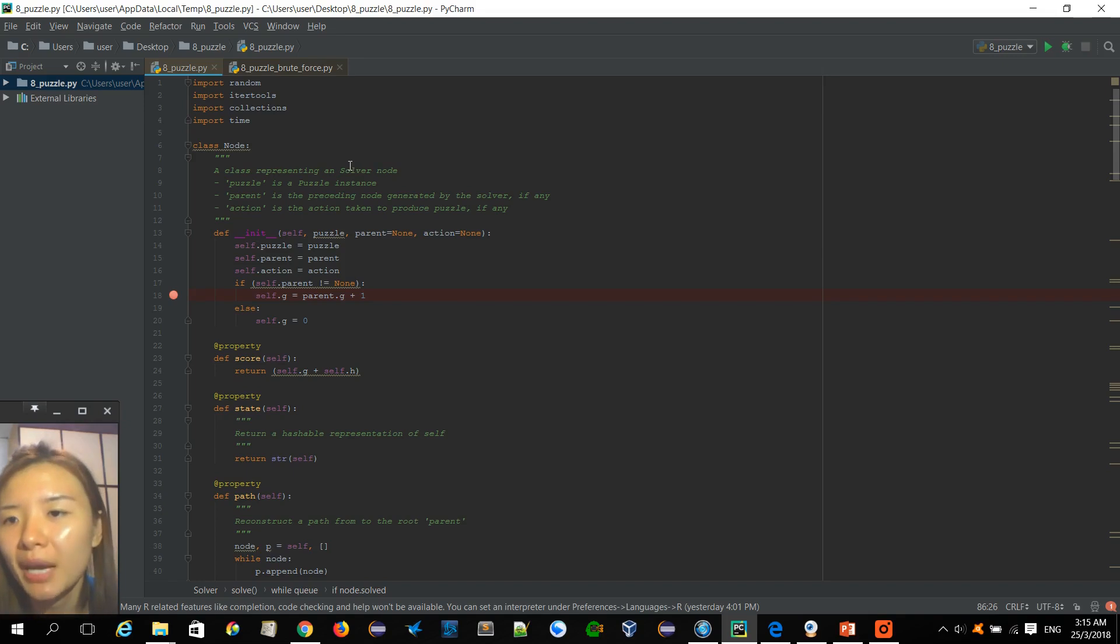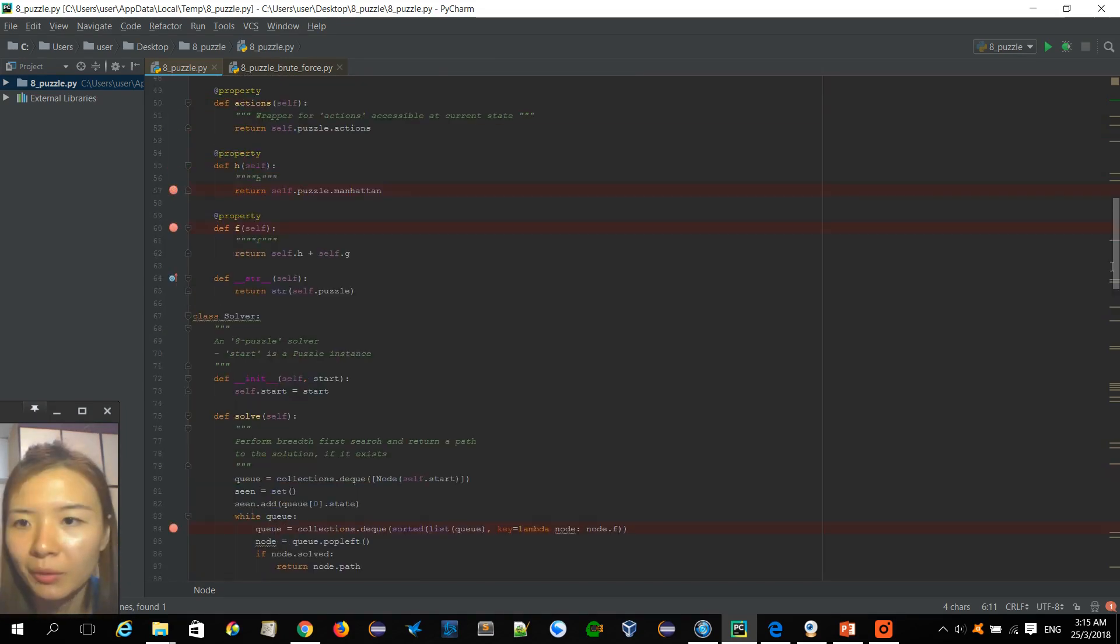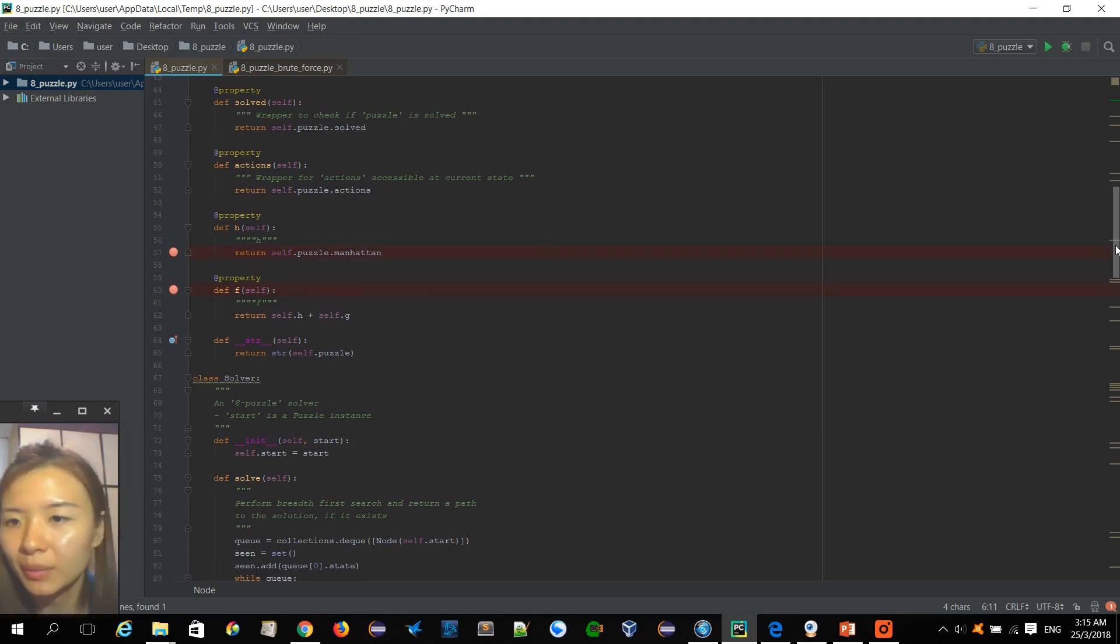I have created an A-star solver in Python. So let's take a look at it. For all the node objects there will be G value and there will be H value using Manhattan distance and there will be F value which is the score of G and H.